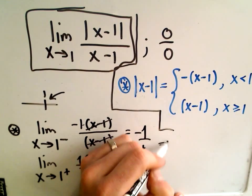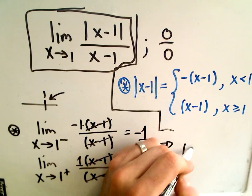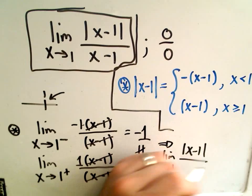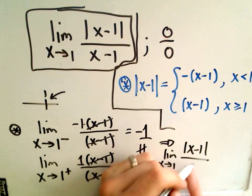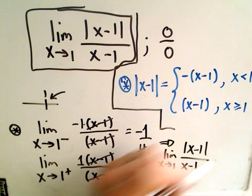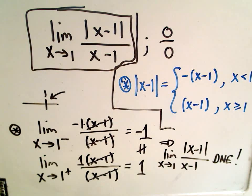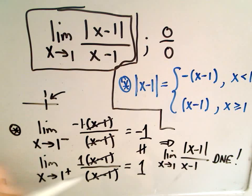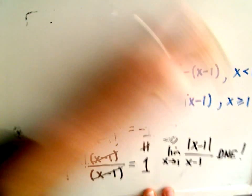We can conclude that the limit as x approaches 1 of absolute value of x minus 1 over x minus 1 does not exist. The left-hand and right-hand limits individually do exist, but the overall limit does not exist.